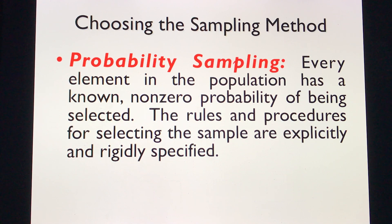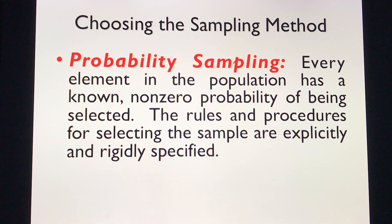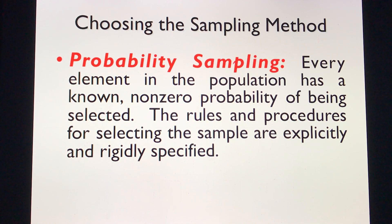What about the act of choosing the sampling method? We have two types of sampling: probability sampling and non-probability sampling. In probability sampling, every element in the population has a known non-zero probability of being selected. The rules and procedures for selecting the sample are explicitly and rigidly specified.